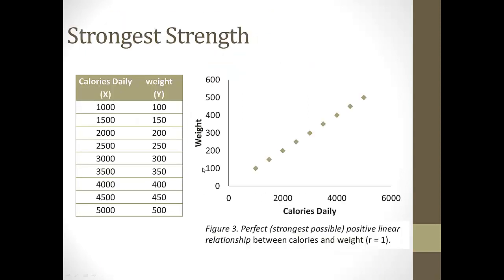Here's a relationship with a perfect correlation — the data points perfectly fit a straight line. This probably wouldn't happen in real life, but for example's sake: calories and weight. As calories increase, weight is increasing — a positive relationship. And it's a perfect linear relationship because it's so consistent: for each 500-calorie increase, there's a consistent 50-pound increase across everybody in the dataset. That correlation would be positive 1 — positive because increase and increase are changing in the same direction, and 1 because it is a perfect linear relationship.